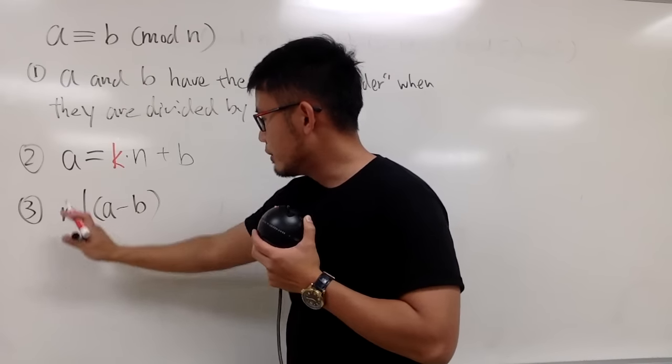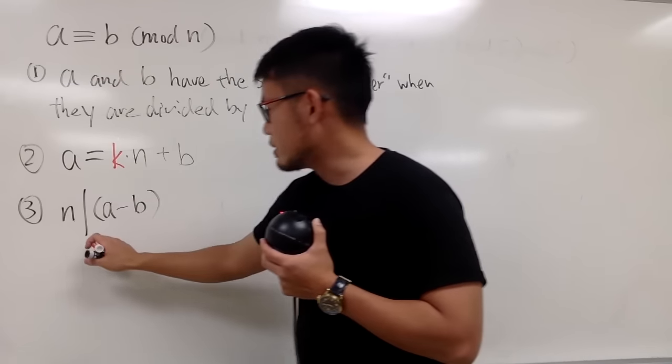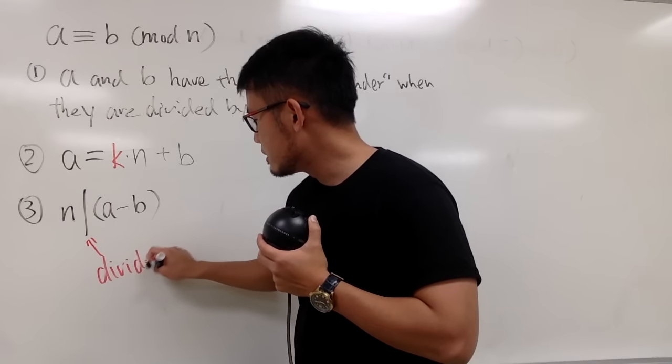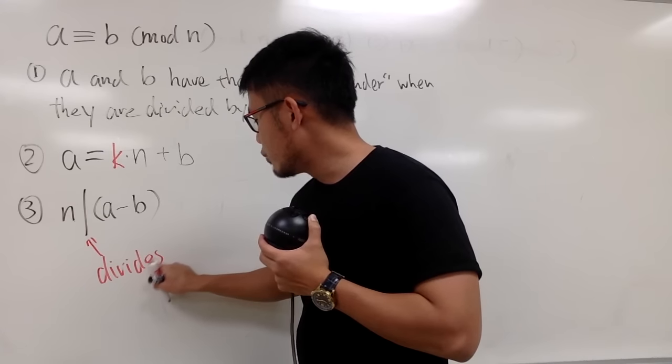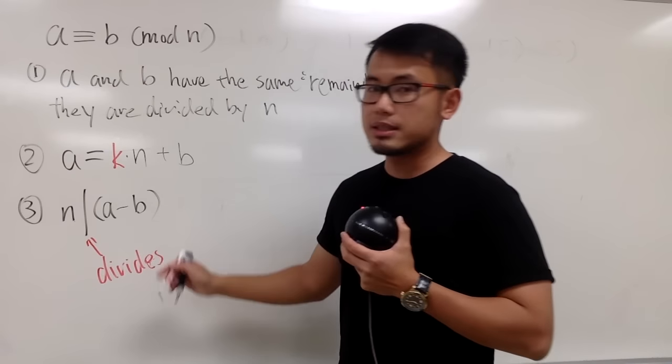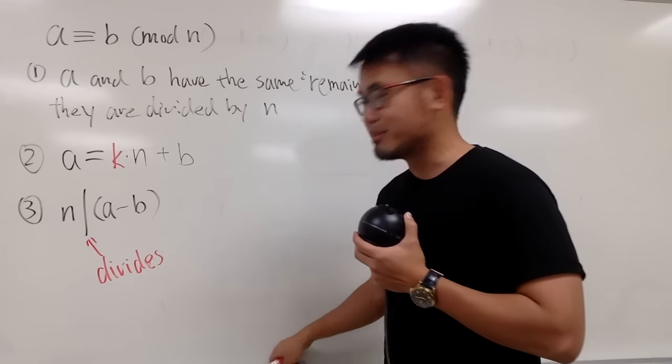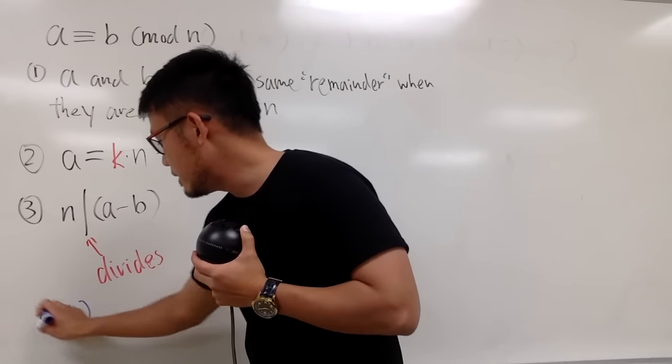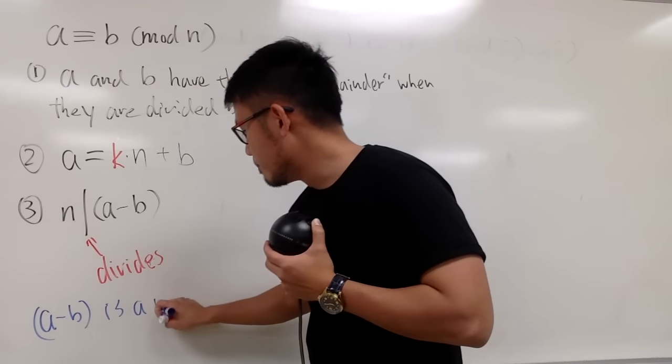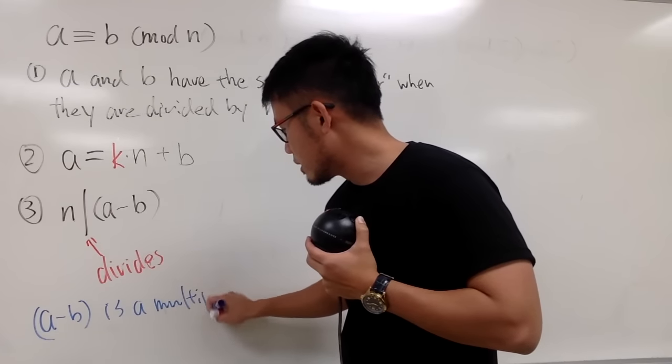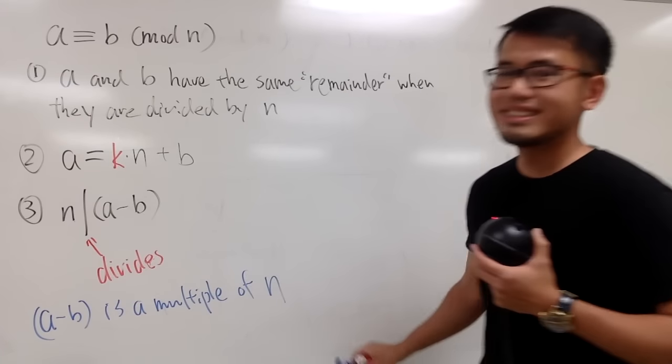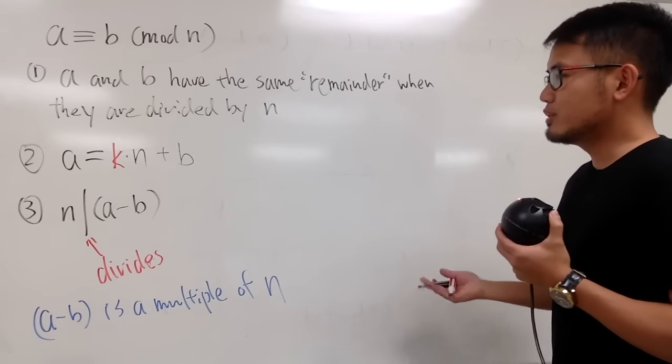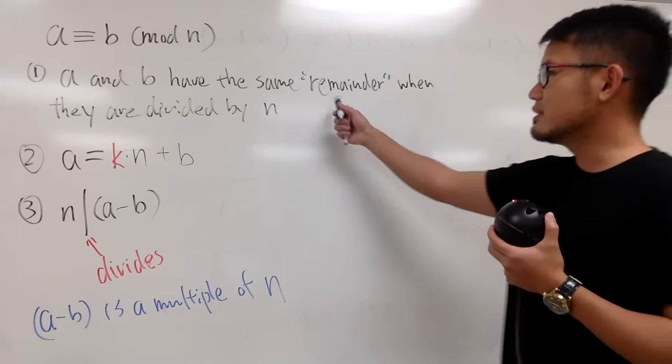And once again, this right here has a few ways to interpret it. This is actually the common notation that we'll be using. This right here—you say "n divides"—and when we write this down, this means that a minus b is a multiple of n. So that's the idea.